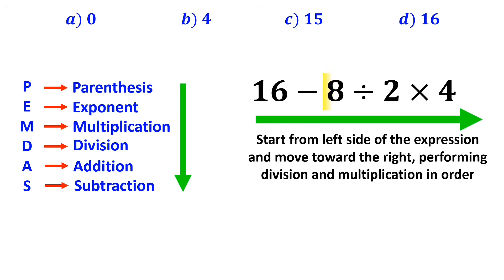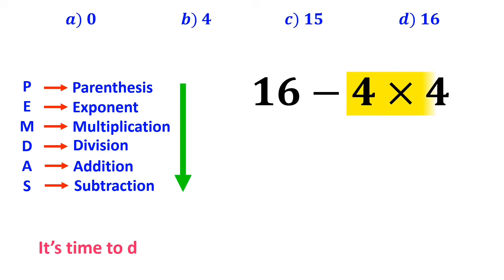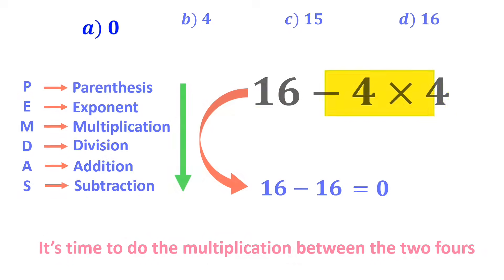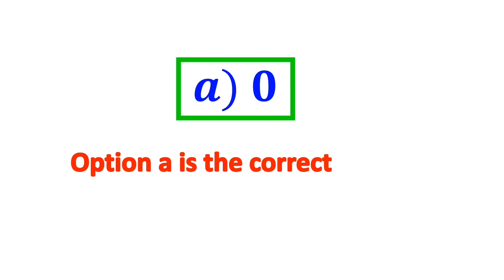So, first we perform the division between 8 and 2, and this expression simplifies to 16 minus 4 times 4. Now it's time to do the multiplication between the two 4s, which gives us 16 minus 16. And finally, the value of this expression is equal to 0. Therefore, option A is the correct answer to this question.